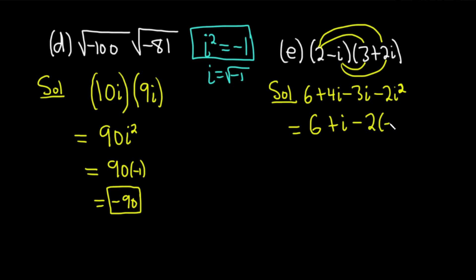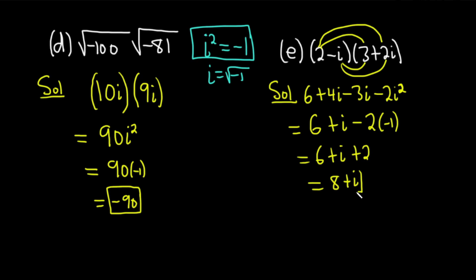i squared is negative 1, so we get 6 plus i plus 2, which gives us 8 plus i. Just be very careful as you go through the process, and remember that i squared equals negative 1.